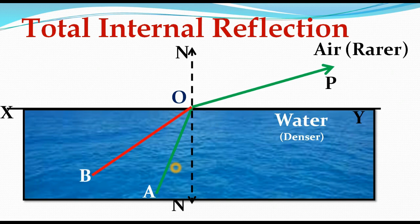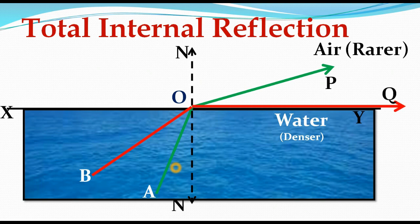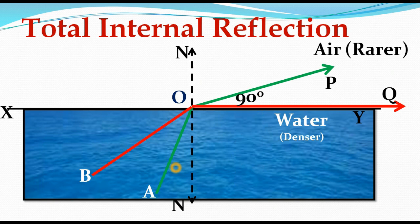Let us take one more light ray BO, also travelling from point B to O. BO is another incident ray travelling through the water, the denser medium, so it also suffers from refraction. It bends away from the normal line and travels in the direction of OQ. In the case of incident ray BO, the refracted ray OQ grazes the interface — it moves along the interface. The angle of incidence of BO is called the Critical Angle. The angle of refraction of OQ is 90 degrees.